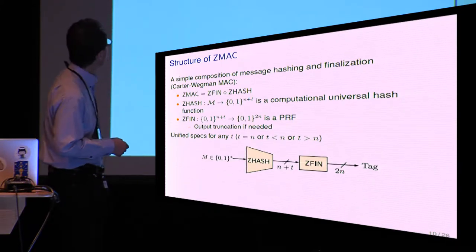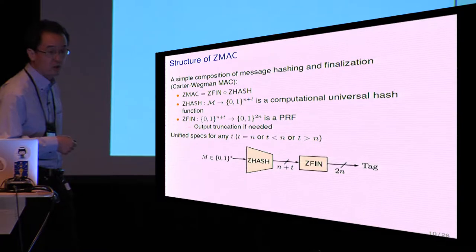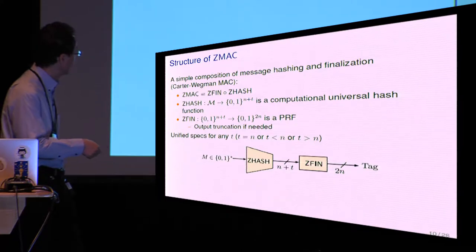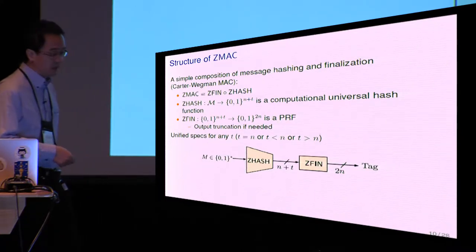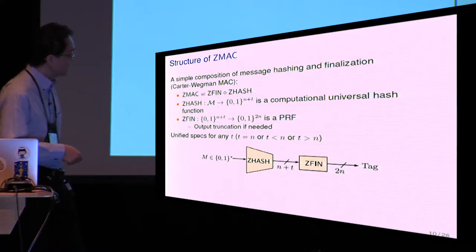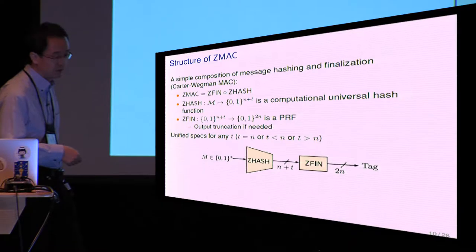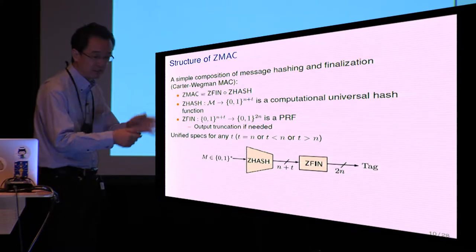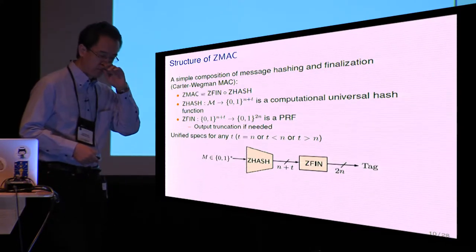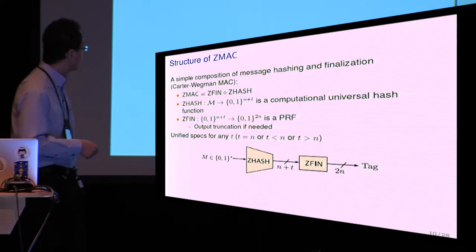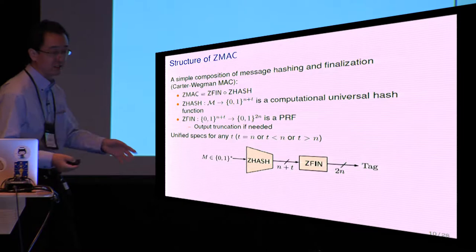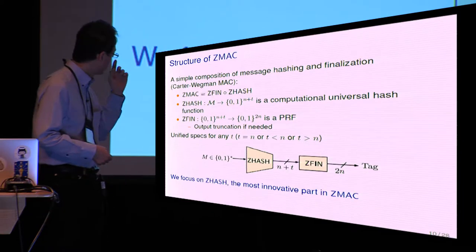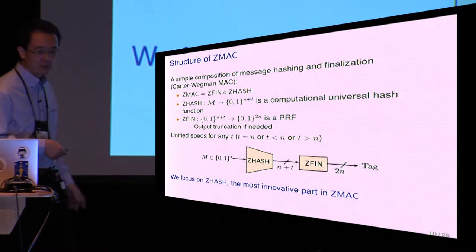Let me explain the structure of ZMAC. This is a simple composition of message hashing and finalization, where the message hashing is called Z-hash, and the finalization is called Z-fin. The output of Z-hash is always n+T bits, and Z-fin output is 2n bits. And if we need a short output, we can simply truncate the final output of Z-fin. We provide a unified specification for any T. I mean that T can be equal to n or larger than or smaller than n. And this talk will focus on Z-hash, because this is the most innovative part of ZMAC.